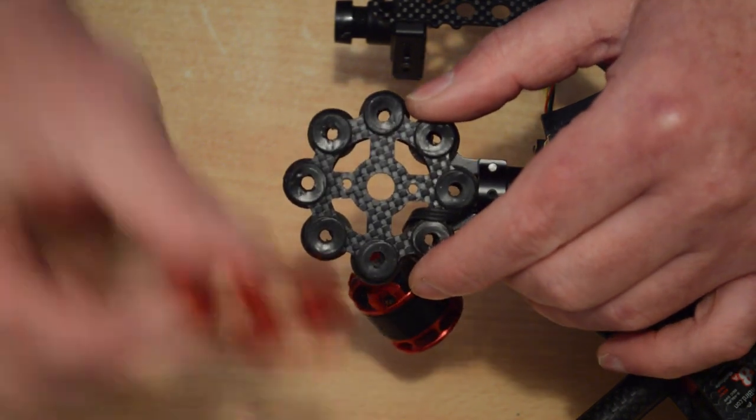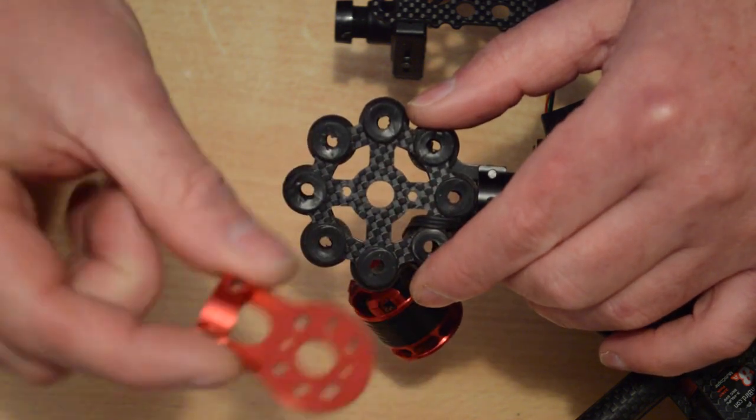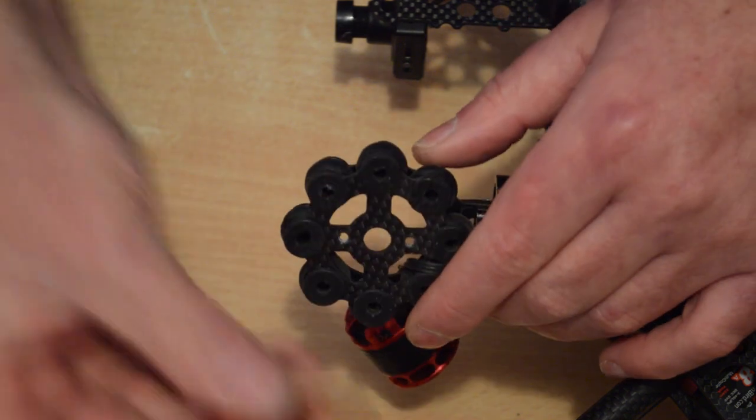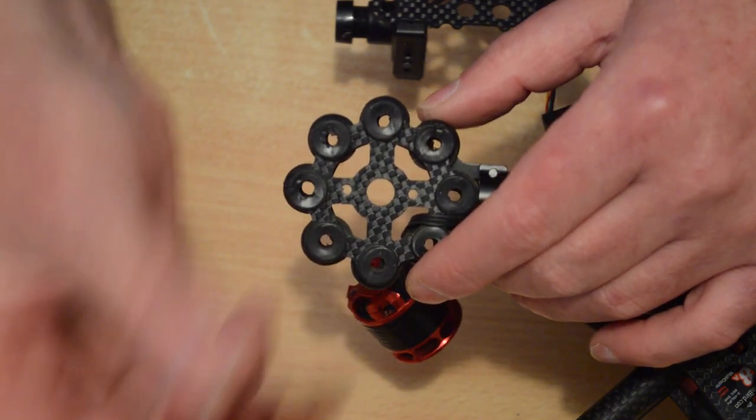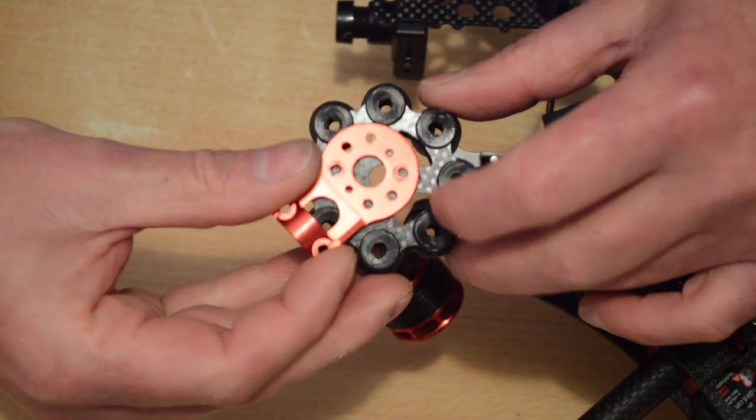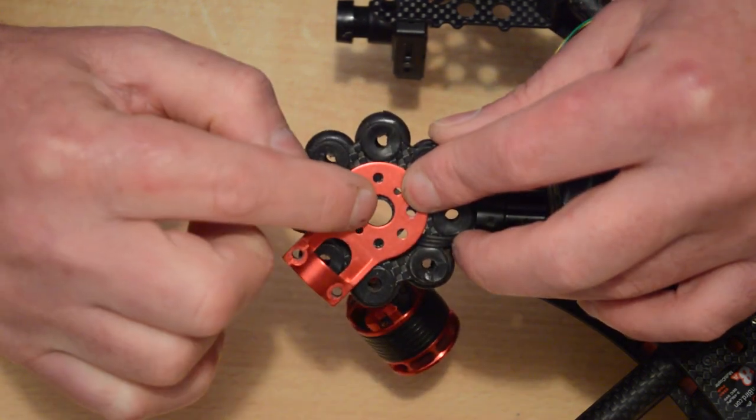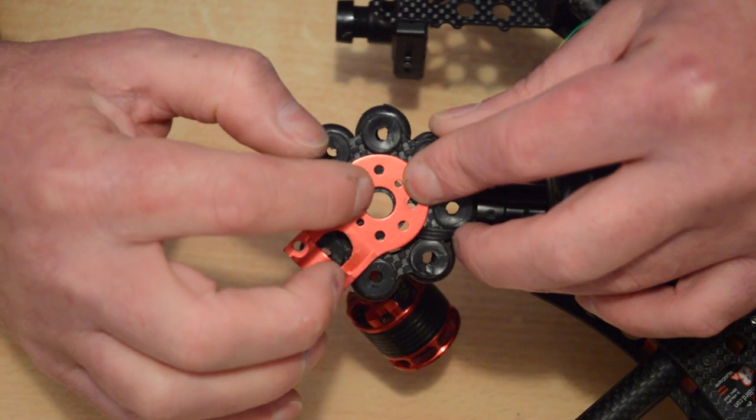While you're sitting there thinking that's going to be a bit tricky, it's not. Grab a motor mount. If you don't have a spare one lying around, just take one off one of the arms. Grab a motor mount and if you sit the motor mount over the plate, you'll see the center hole of the motor mount is just a tiny bit larger than the center hole of the 8-ball.